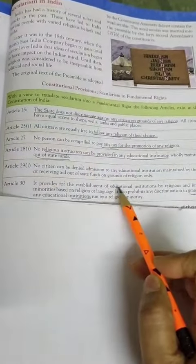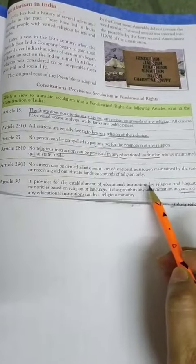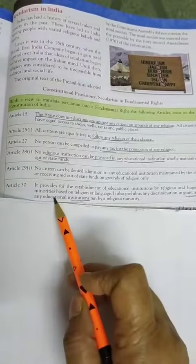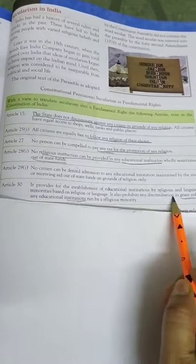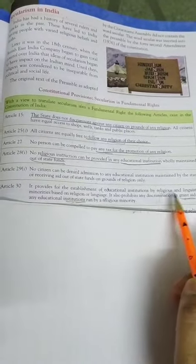Article 30: It provides for the establishment of educational institutions by religious or linguistic minorities based on religion or language. देखें, कितना अच्छा provision है,